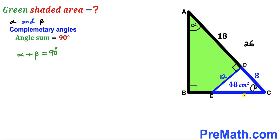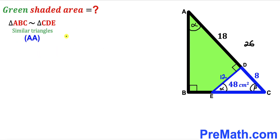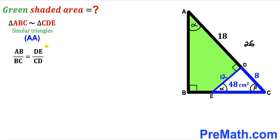Now let's focus on this tiny blue triangle CDE. We know this angle is beta and this is our 90 degree angle, so therefore this remaining angle has got to be alpha. We conclude that these two right triangles — right triangle ABC and blue right triangle CDE — are similar triangles according to angle-angle similarity. Since these two triangles are similar, we are going to have a proportion: the ratio of side lengths AB to BC must equal the ratio of side lengths DE to CD.